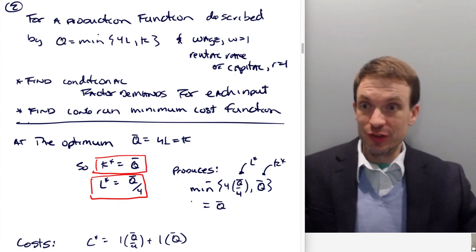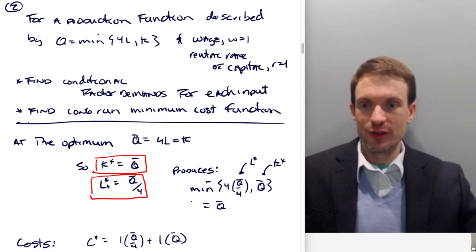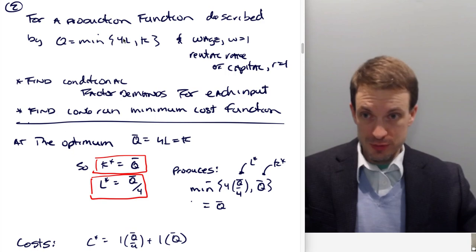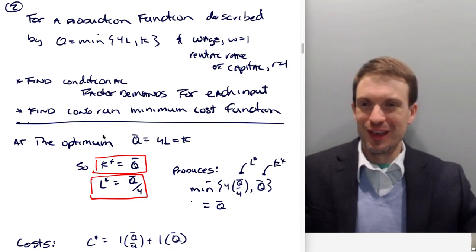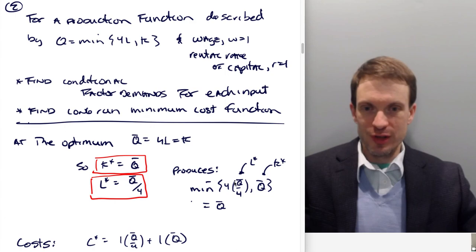Cool. And sure enough, this is going to produce q units of output because if I drop in these factor demands, right, 4 times L, and L was q over 4. Wow, that's just q. And then K is equal to q. Sure enough. And then whichever is a smaller of these q and q. Yeah, that's just q. So we know that the output we've produced is q and we've done this without any waste. Right? So we've optimized.